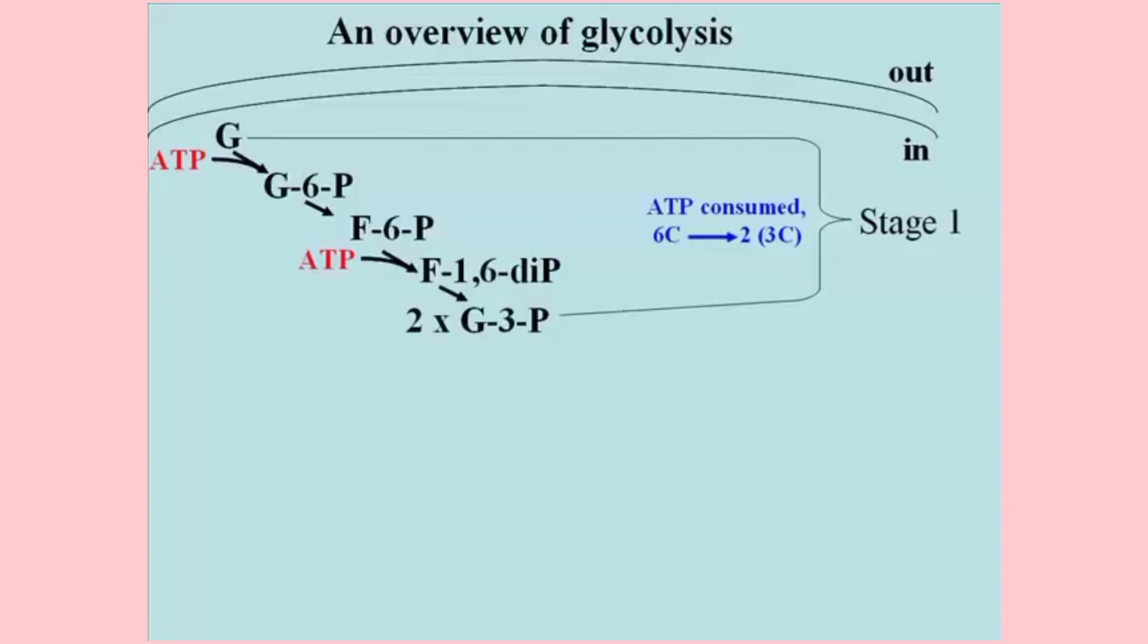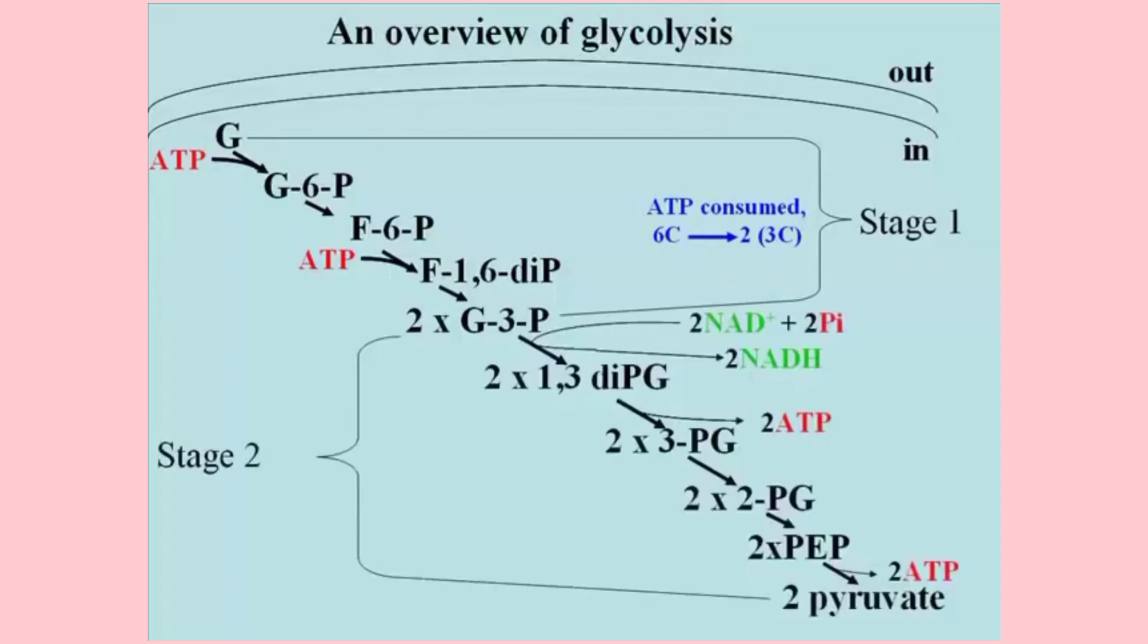Here's stage two of glycolysis. Note that each of the reactions in stage two happens twice per starting glucose molecule and yields in the end two molecules of pyruvate or pyruvic acid. The first reaction of the second stage is an oxidation or redox reaction involving the oxidation of glyceraldehyde 3-phosphate or G3P. In two subsequent reactions, ATP will be made by substrate level phosphorylation. Because these reactions occur twice, a total of four ATP molecules will be made by the time pyruvate is produced.